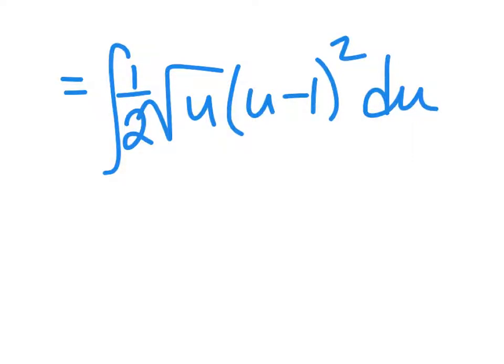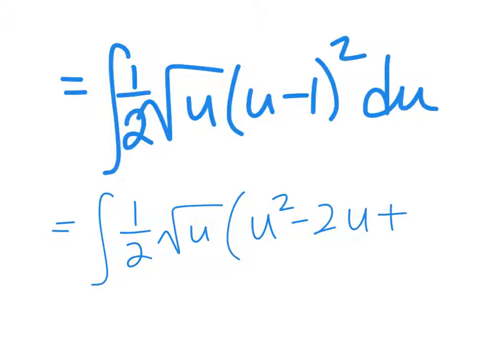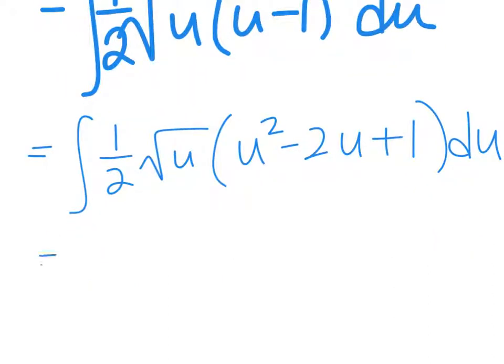So basically, at this time, multiply everything out. And then I'm going to distribute everything, except I'm going to take the one half out, because that's a constant. And then if I distribute in, everything becomes a bunch of fractions, not as nice. So I'm going to take that one half out.